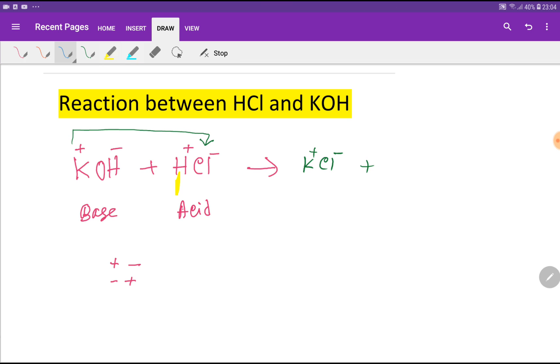The positive part of acid will go with the negative part of base. H, which is water. So acid and base react with each other and we get salt—potassium chloride—and water.